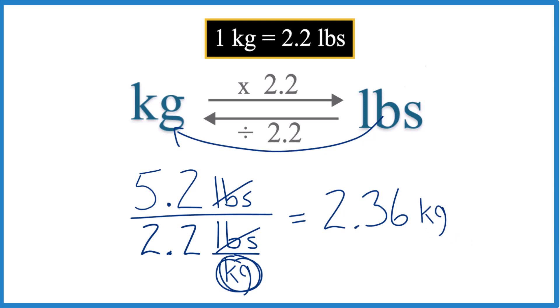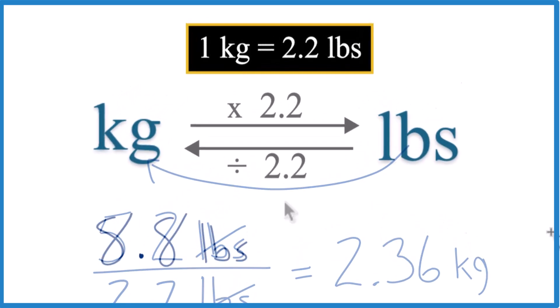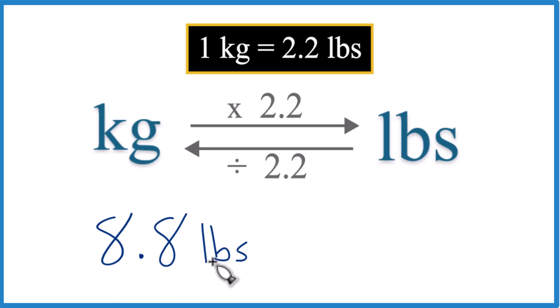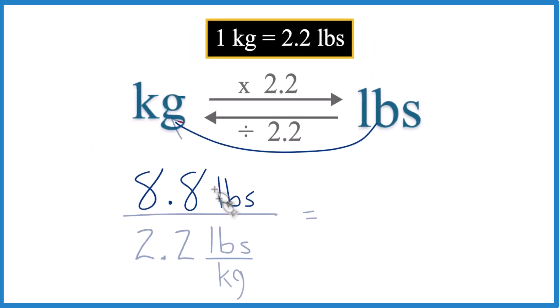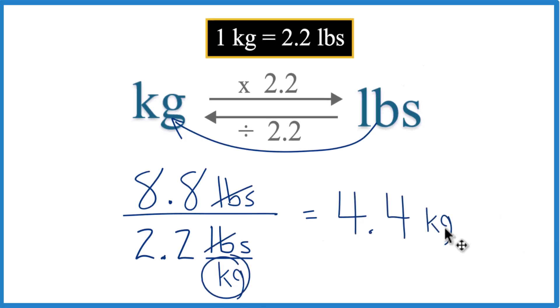So pause and give this one a try. Convert 8.8 pounds to kilograms. Divide by 2.2. You keep your units. Those cancel out. Left with kilograms. We end up with 4.4 kilograms.